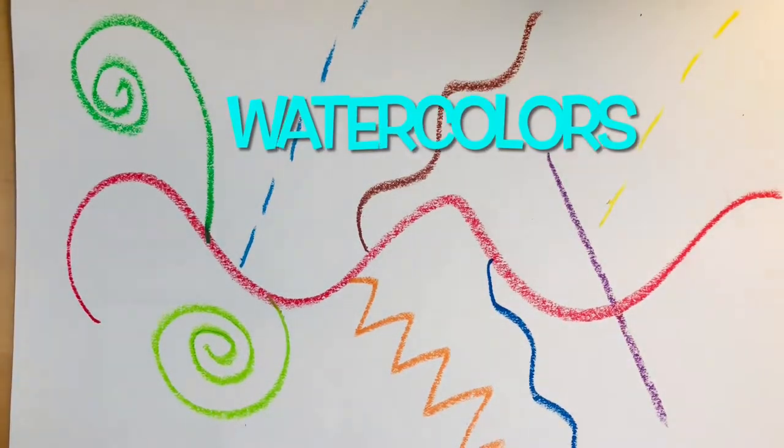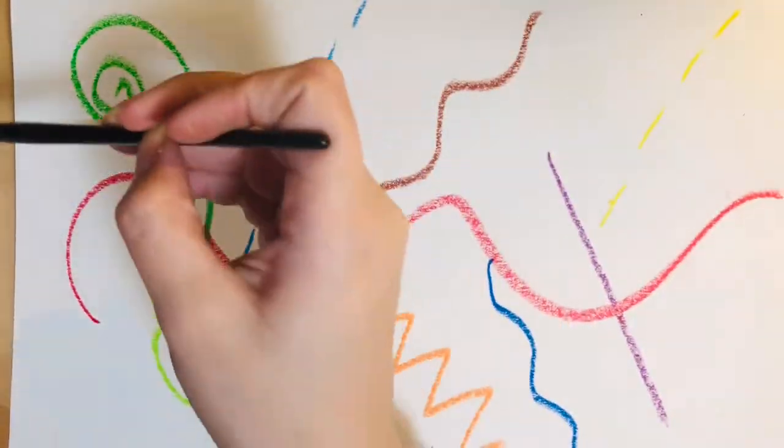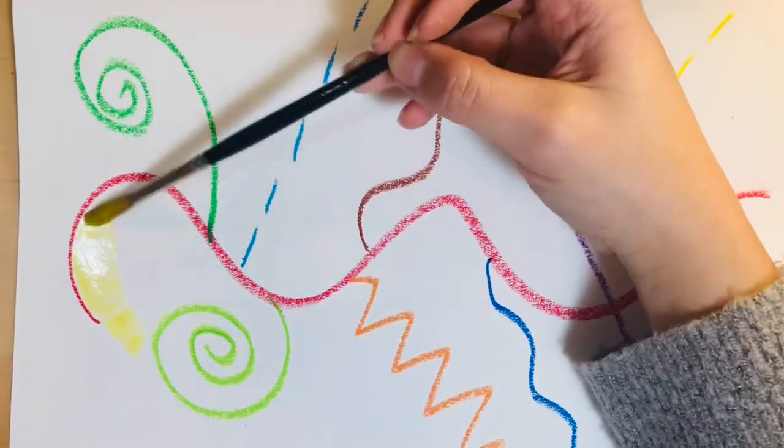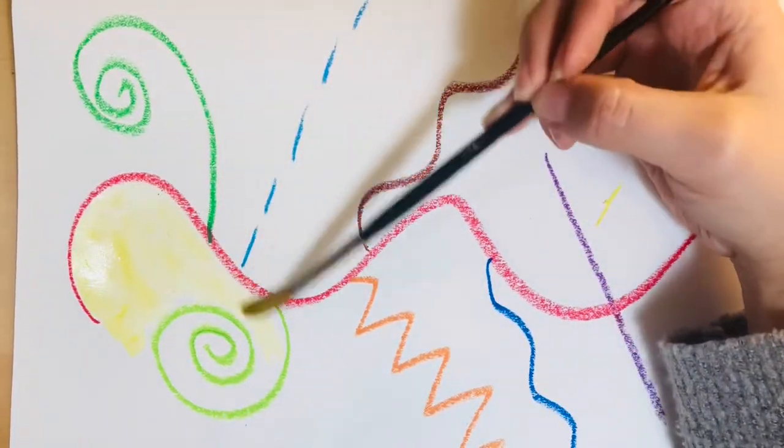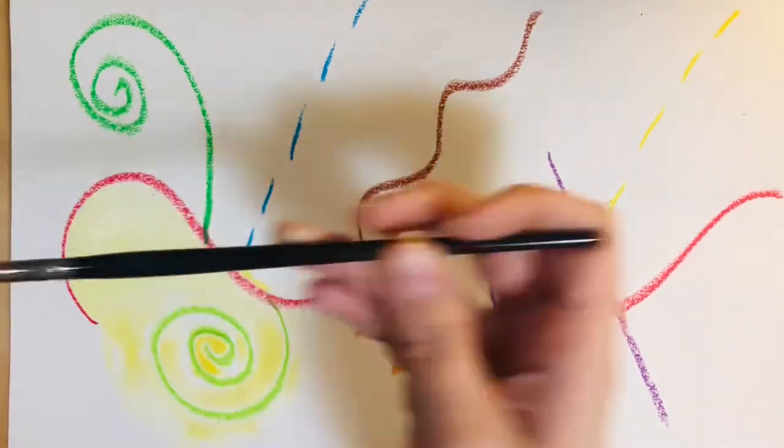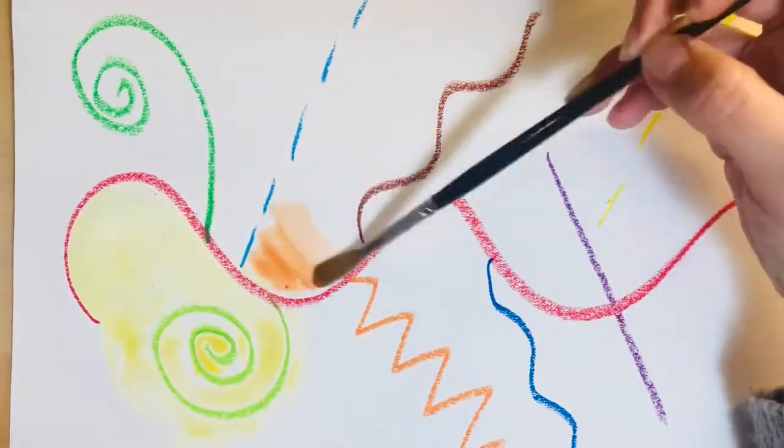Next, you will need to get out your watercolors to fill in the negative space of your paper, which is all the white space left. If you do not have watercolors, you can use colored pencils, crayons, or color markers, but try to do it lighter than the color of your lines so they are still visible.